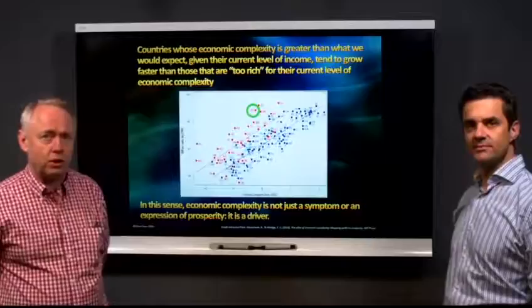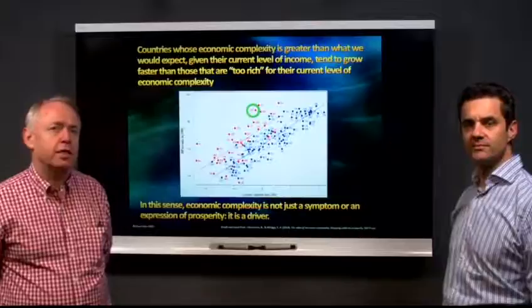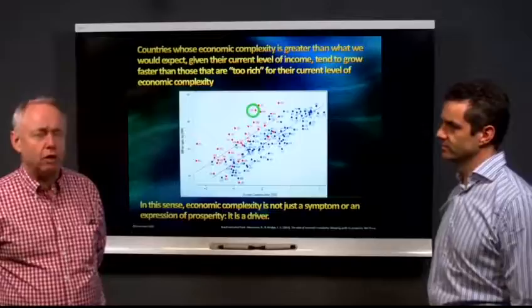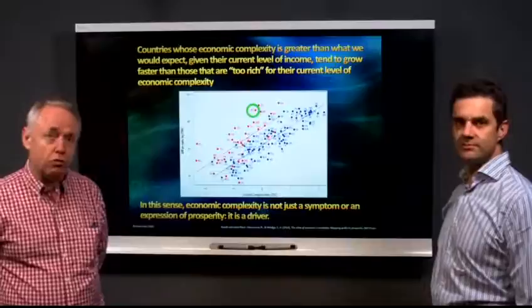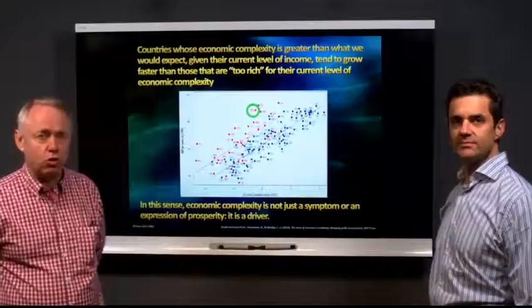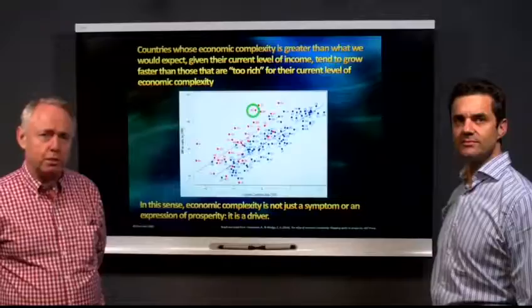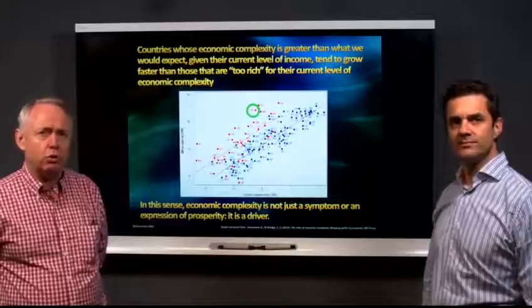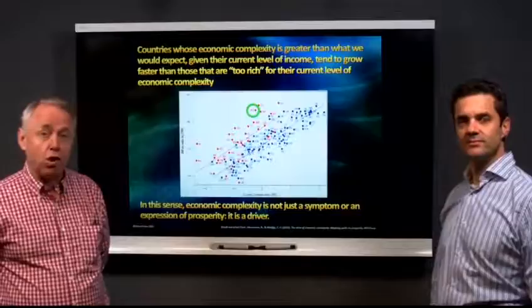What you find here is a plotting of how complex an economy is and what its prosperity level is. The higher the complexity — and I will explain complexity in a second — the higher the prosperity of the country. What we know from research is that complexity is the driver of prosperity. So it's not a correlation, it's actually a causality. Complexity means that the more complex you are, the more you are able to produce things that nobody else can produce.